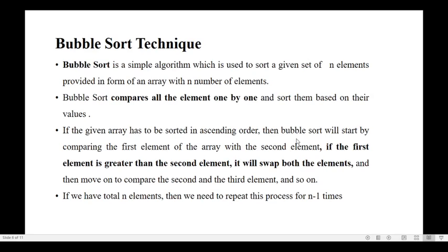If the given array has to be sorted in ascending order, bubble sort starts comparing the first element with the second element. If the first element is greater than the second element, swap both elements. If the current element is less than the next element, move on to the next element and repeat. Continue comparing until all n elements are covered — we need to repeat the process n minus one times.